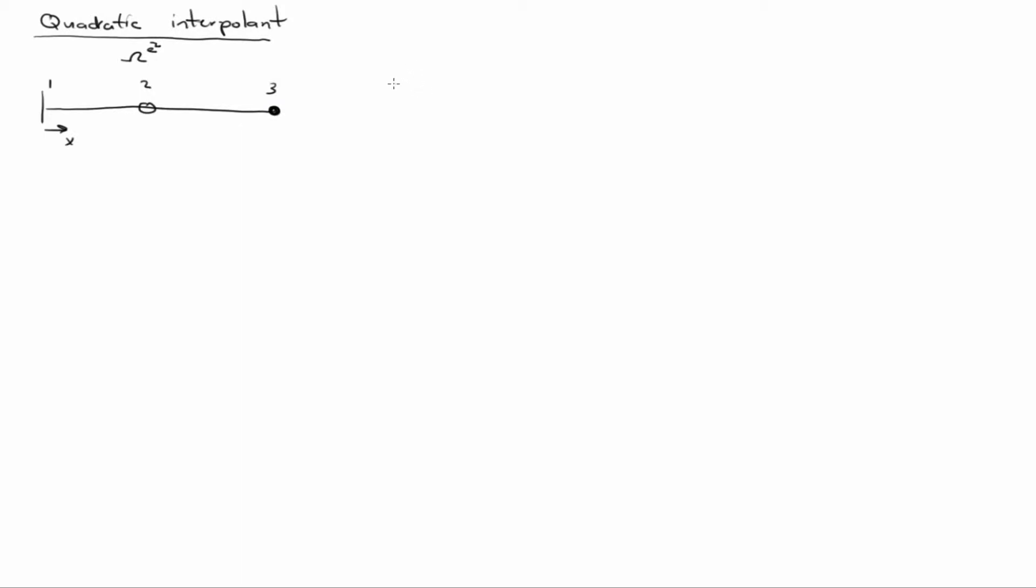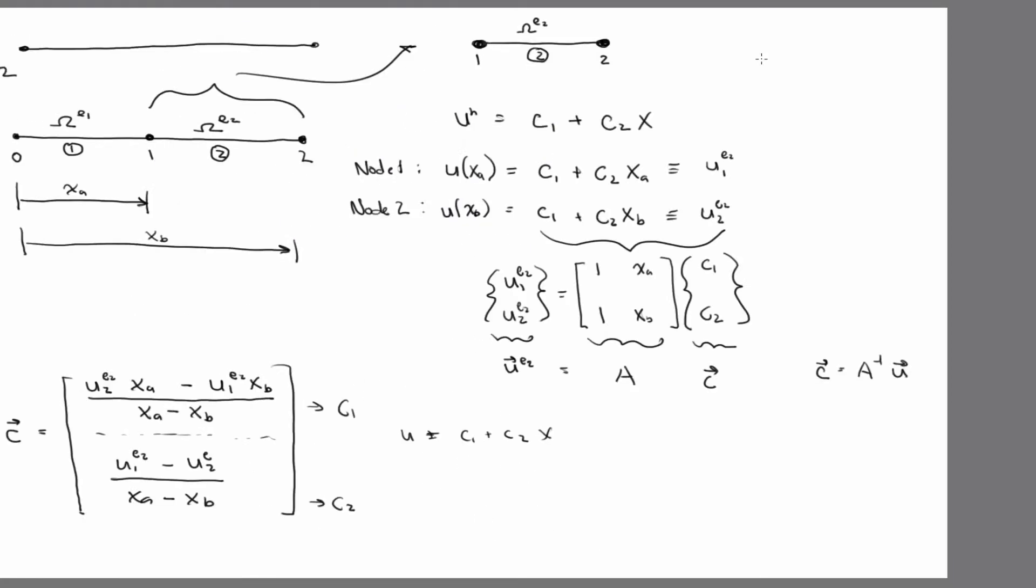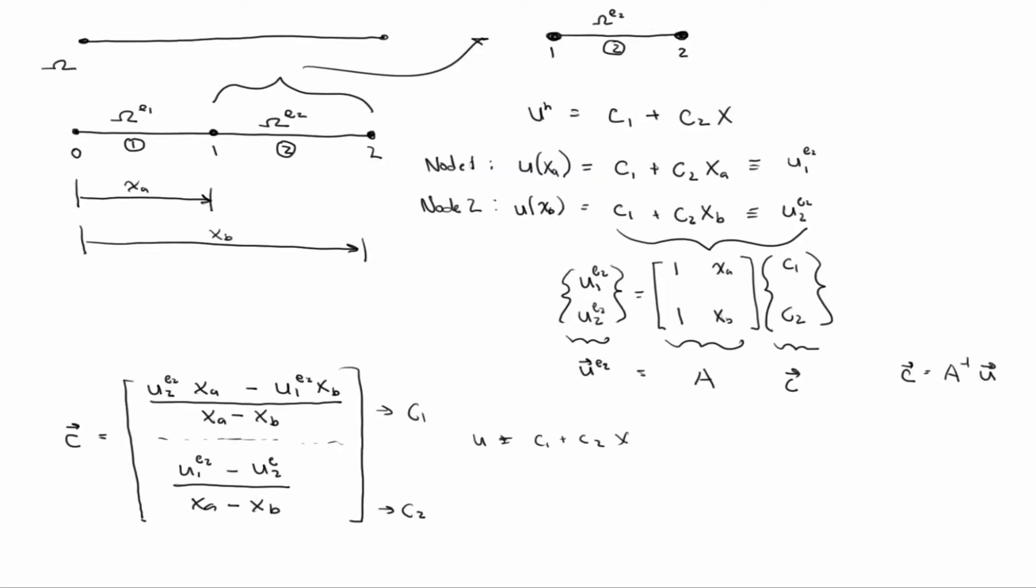And for a quadratic interpolation, we want to have that u of a h is equal to nj uj equals c1 plus c2 x plus c3 x squared. So if you remember, the first thing I did here was I wrote these equations. So I evaluated this guy at every node, and so I wrote those system of equations, and then I wrote them in matrix form.